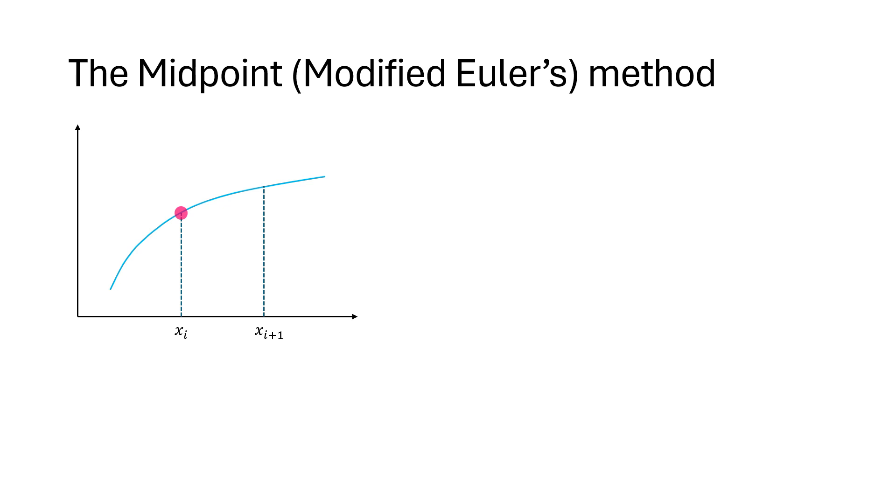From our ODE, we can get the slope at this point. Here, instead of predicting at x_i+1 like we did in Hune's method, we only predict till i+1/2, which is half the step size.